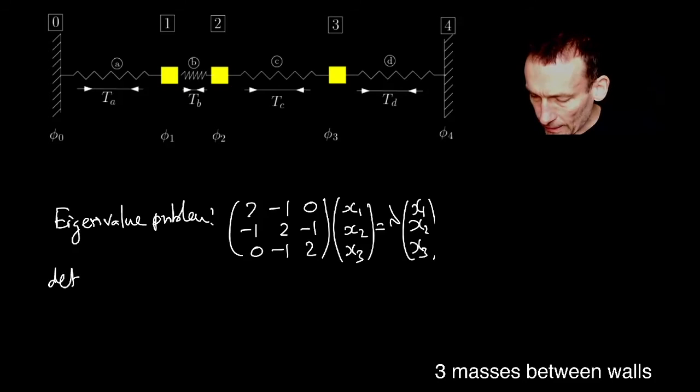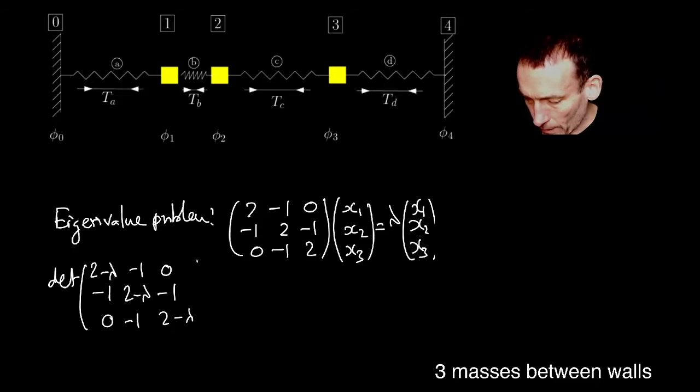So my characteristic equation then is now I want the determinant of [2-λ, -1, 0; -1, 2-λ, -1; 0, -1, 2-λ] to be equal to 0.